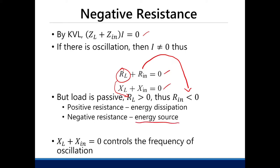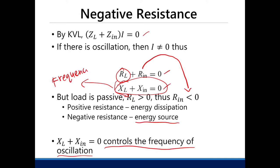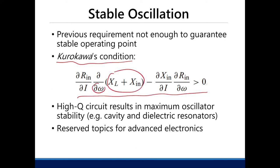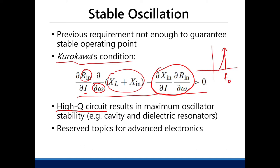So it must be an energy source. The reactive equation controls the frequency of oscillation since reactive devices are mostly frequency dependent. A stable oscillation will occur using Kurokawa's condition: the change of reactive devices with frequency multiplied by the change of R_in with respect to current must be greater than a threshold. Basically, you just need a high-Q circuit. A high-Q circuit creates very large selectivity and can be approximated as a delta function.